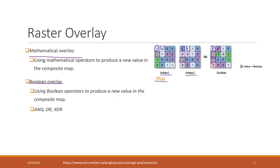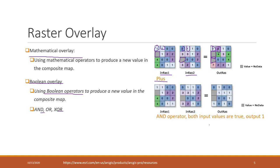We can also do Boolean overlays using Boolean operators like AND. If we use the AND operator, both inputs must be true — meaning both values must be above zero — for the output to be true (1). If one layer has a zero, the output is zero. If both rasters have a value of one, the output is one. As always, if any input has no data, the corresponding output will be no data.